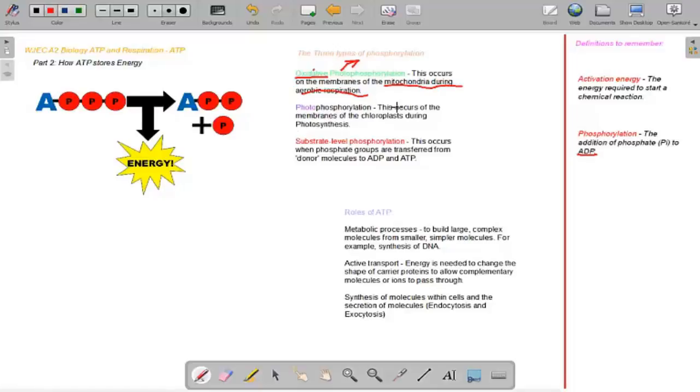Photophosphorylation is again the stimulation of phosphorylation being stimulated by light photons. It occurs on the membranes of the chloroplasts during photosynthesis. Substrate level phosphorylation occurs where the phosphate group is transferred from donor molecules to ADP and ATP.